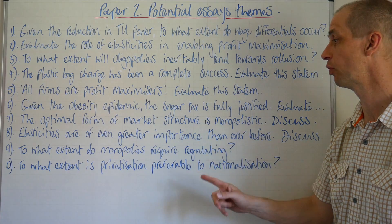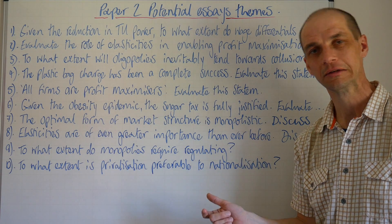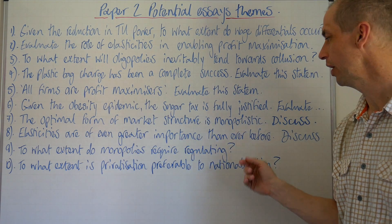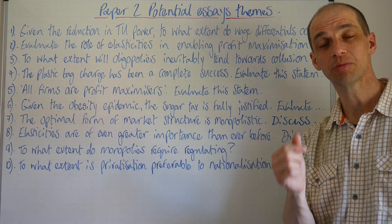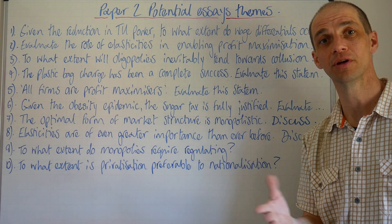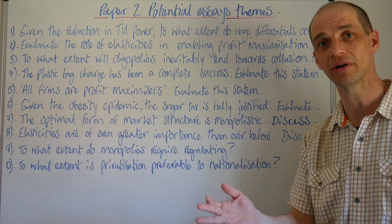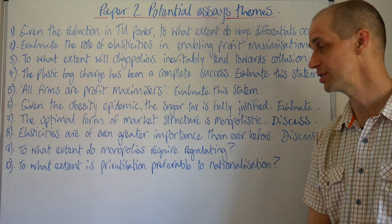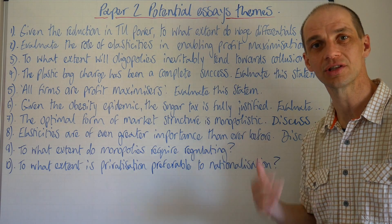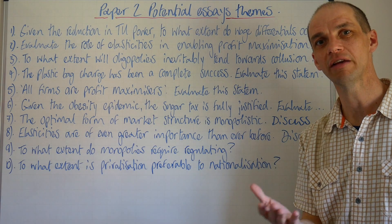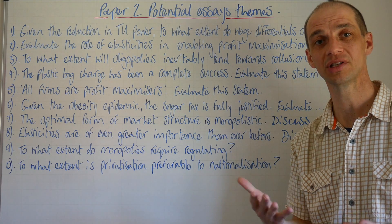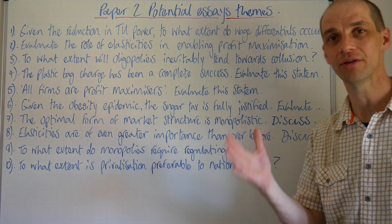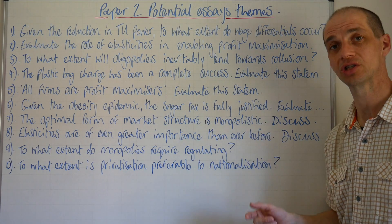Number seven: the optimal form of market structure is monopolistic competition. This type of question has appeared before. Monopolistically competitive firms offer differentiated goods but don't exploit consumers because they lack sufficient market power in most circumstances. However, do they really achieve dynamic efficiency? Most monopolistically competitive firms only achieve normal profits, so this is a really nice question to explore.